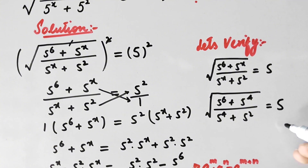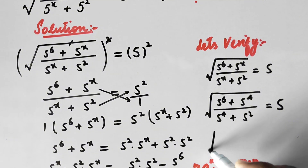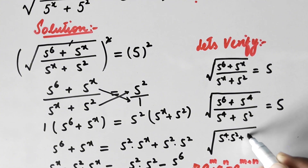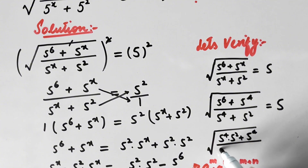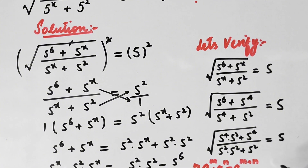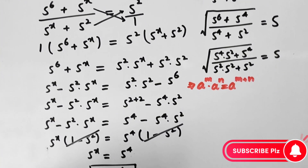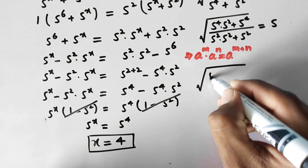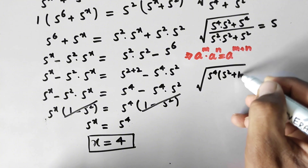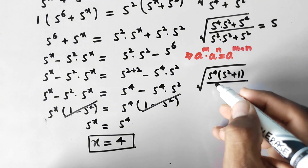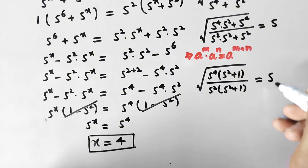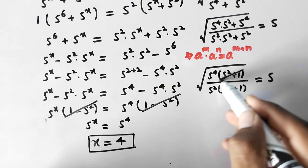We can write the numerator as 5 to power 4 times 5 square plus 5 to power 4, and the denominator as 5 square times 5 square plus 5 square. Taking 5 to power 4 as common from the numerator gives (5 square plus 1), and taking 5 square as common from the denominator also gives (5 square plus 1). These terms are the same so they cancel each other out.